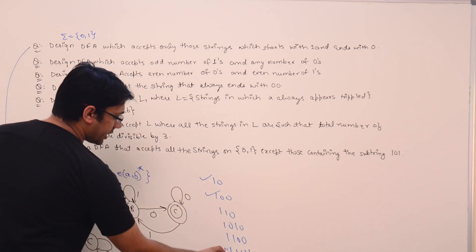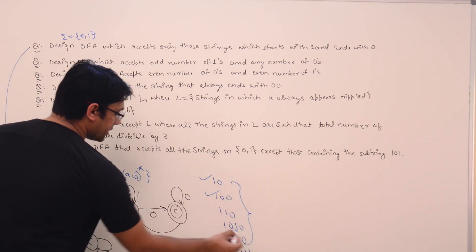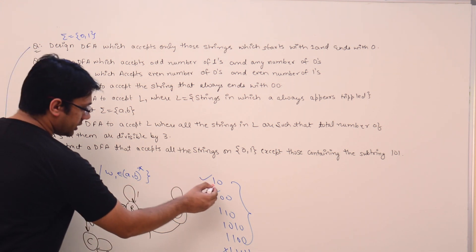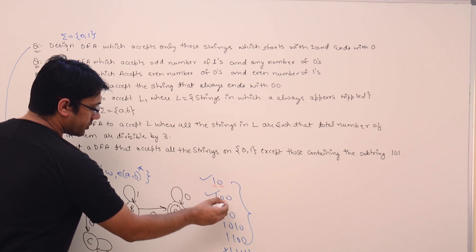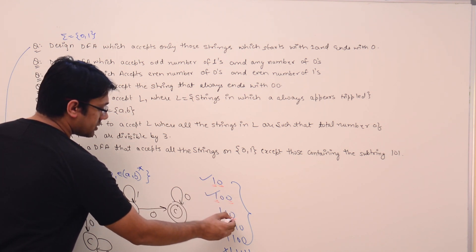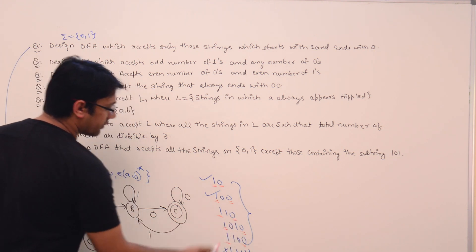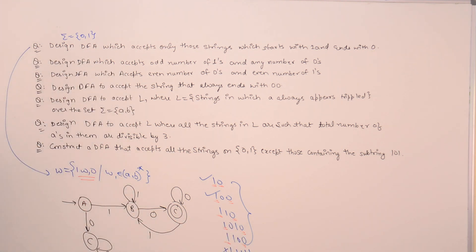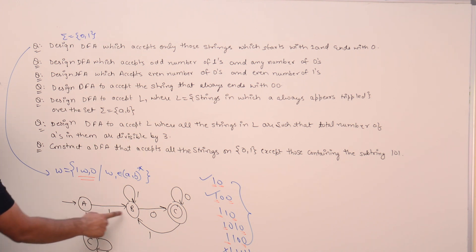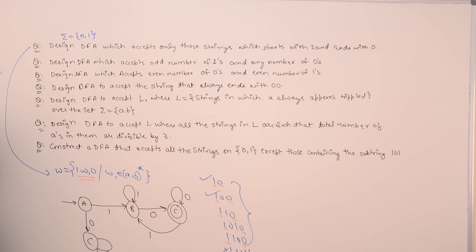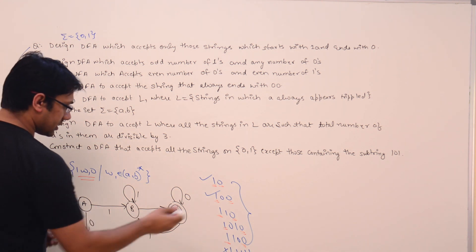The string 1 1 1 1 is not in the language, but all the others are. You can see all those strings start with 1 and end with 0. All of them should be accepted. Let us take the first string 1 0: reading 1, we go from state A to state B; reading 0, we go from state B to state C. So it is accepted.